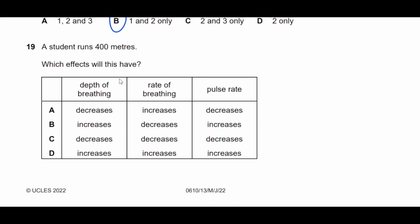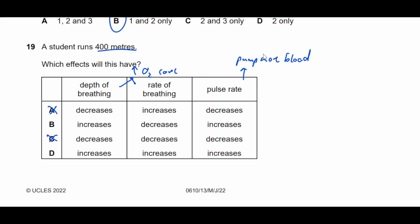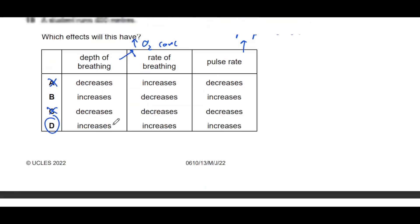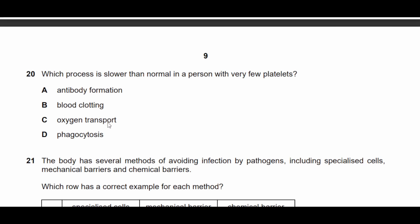Question nineteen: a student runs 400 metres. What effects will this have? The depth of breathing would increase, and the rate of breathing would increase — to get more oxygen. The pulse rate also increases to pump more blood and oxygen throughout the body. Therefore the answer is D.